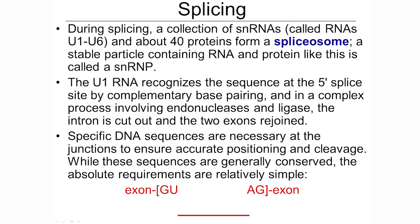How does the splicing occur? The small nuclear RNAs come in — a specific set called the U RNAs, U1 through U6, and a whole bunch of proteins, about 40 of them. This might sound familiar — a bunch of RNAs and proteins, like what we've seen in the ribosome. This is called a spliceosome.